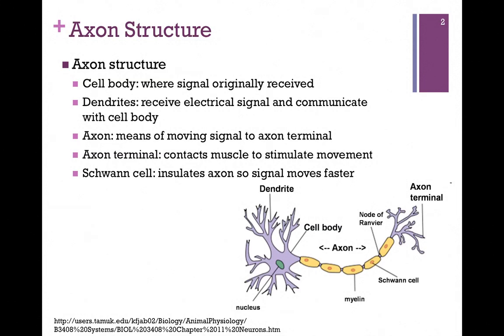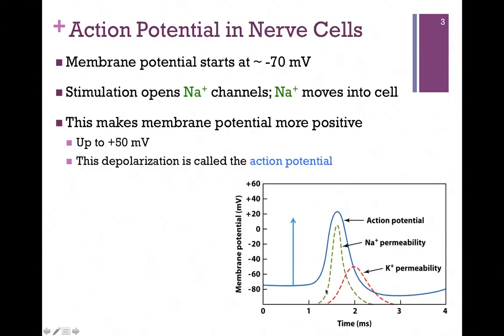We notice there are also Schwann cells, pictured here in yellow. They wrap around the axon and insulate it so the signal moves faster. We'll see how that works in a little bit.